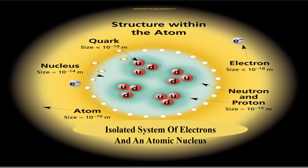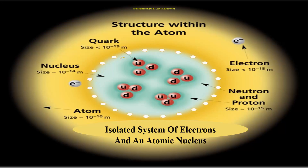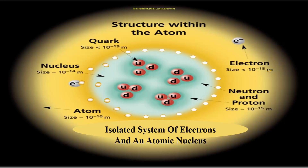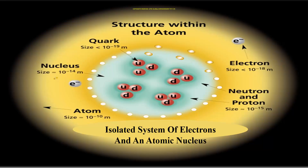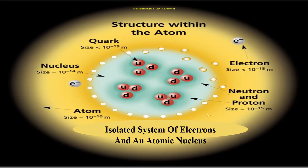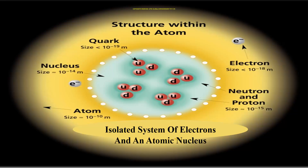This is the structure of an atom which will have the nucleus. The quark is of size less than 10⁻¹⁹ m, the electron is around 10⁻¹⁸ m, the neutron and proton are of size 10⁻¹⁵ m, and the nucleus is of size 10⁻¹⁴ m. The entire atom will have the nucleus with the electrons around it.